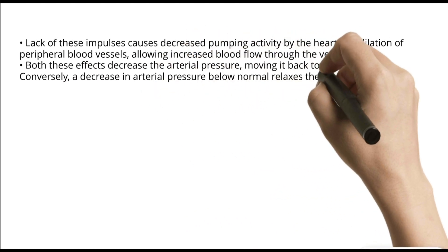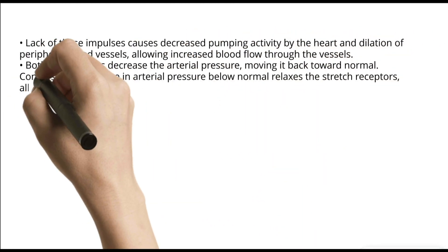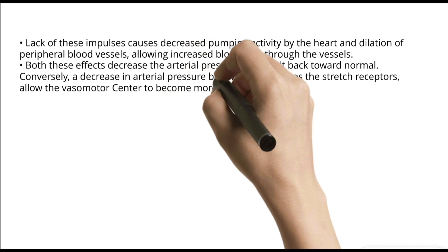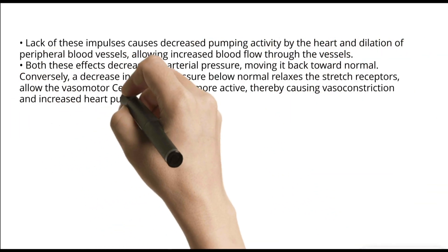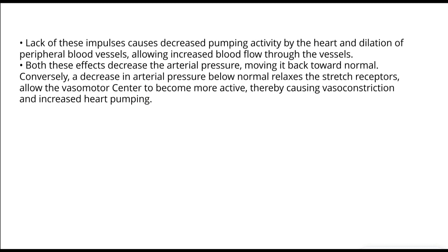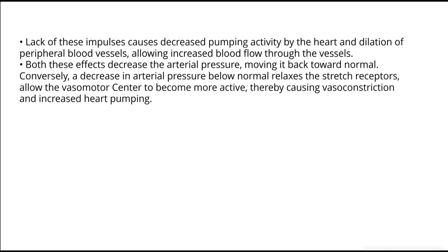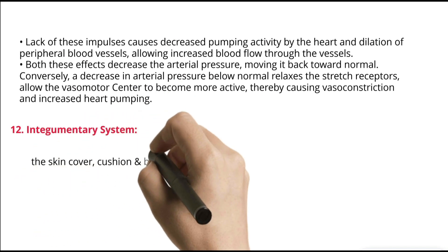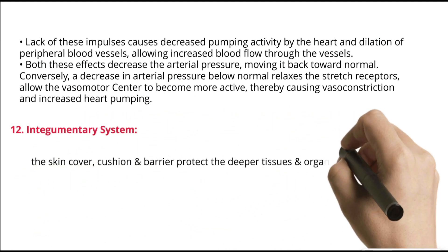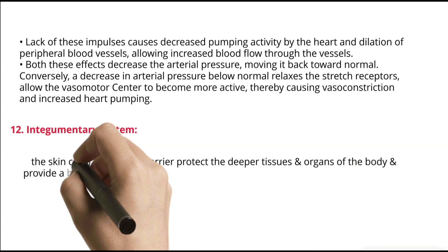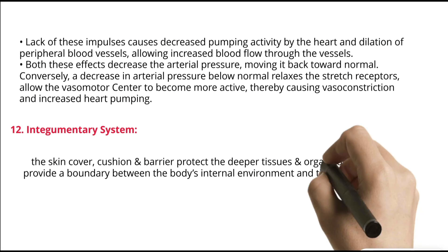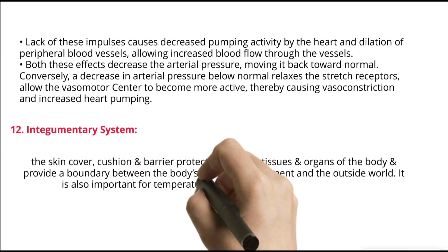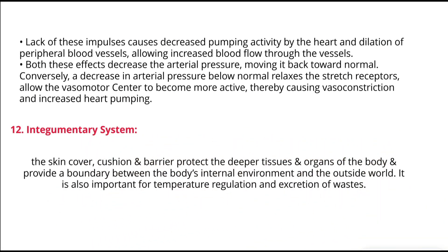Conversely, a decrease in arterial pressure below normal relaxes the stretch receptors, allowing the vasomotor center to become more active, thereby causing vasoconstriction and increased heart pumping. 12. Integumentary system — the skin covers, cushions, and provides a barrier to protect the deeper tissues and organs of the body, providing a boundary between the body's internal environment and the outside world. It is also important for temperature regulation and excretion of wastes.